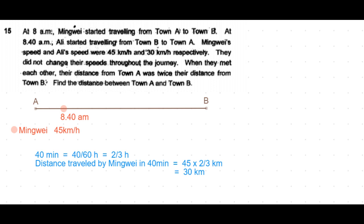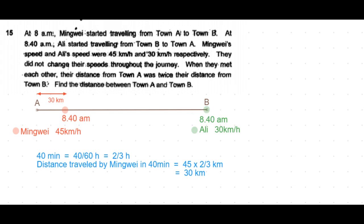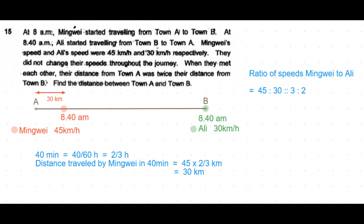So the distance she can travel in 40 minutes is 45 times 2/3, which is equal to 30 kilometers. That's because distance equals speed times time. At the same time, Ali at 8:40 is starting from Town B at 30 kilometers per hour. Notice that Mingwei has already traveled 30 kilometers. Now the ratio of speeds, Mingwei to Ali, is 45 to 30.